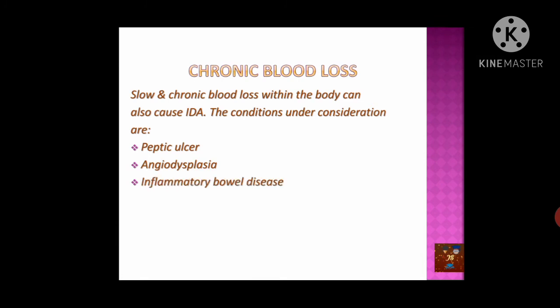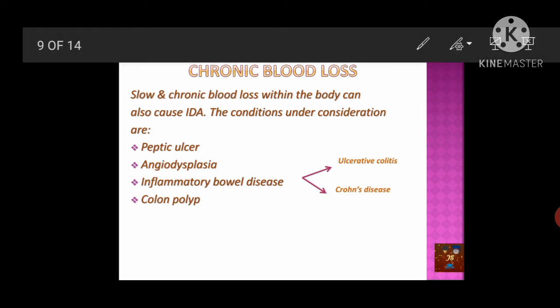Inflammatory bowel disease can also cause chronic blood loss, covering two main problems: ulcerative colitis — inflammation in the lining of the large intestine and colon causing bleeding — and Crohn's disease, which affects deeper layers of the GI tract and causes bleeding. Colon polyps — clumps of small cells in the lining of the colon — if present for a long period of time may bleed and cause loss of blood.